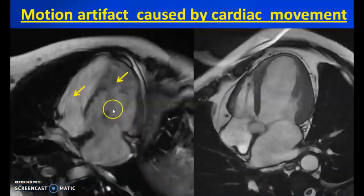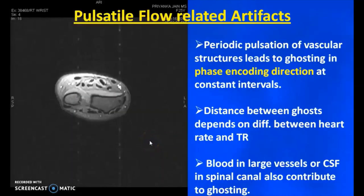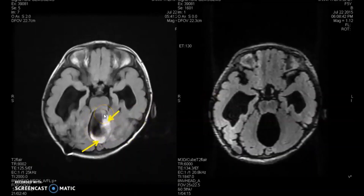ECG gating can also be done, giving a similar waveform synchronized with image acquisition. Without gating the images are degraded; after ECG gating, you can get clear images. The pulsating flow-related artifact is another type of movement artifact caused by blood flow or CSF flow. For that, saturation bands have to be applied. CSF flow artifacts can be eliminated with the help of the 3D phase-contrast sequence, which can completely remove them.